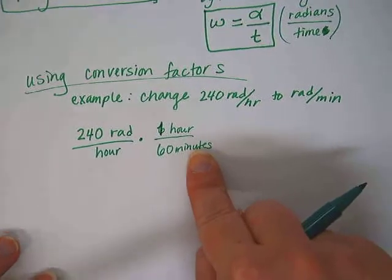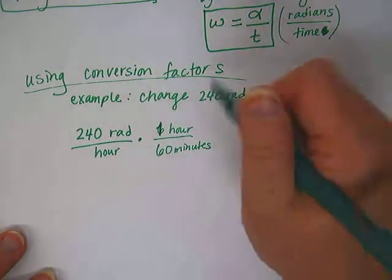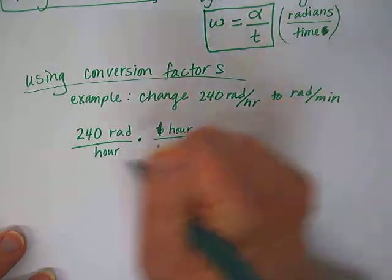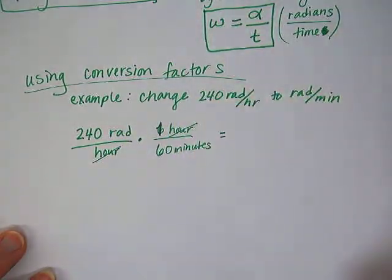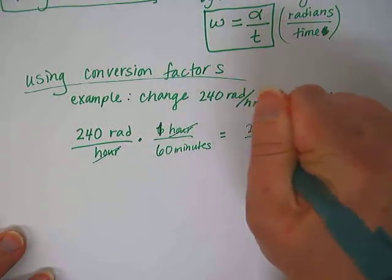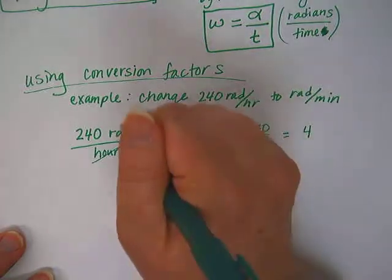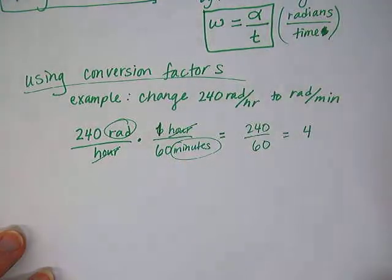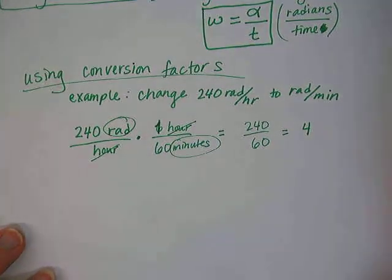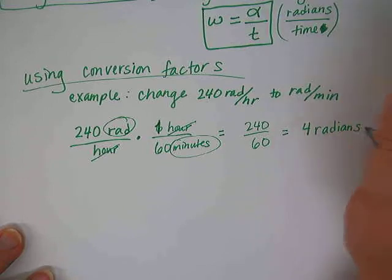In this case, I want to get rid of hours and change to minutes on the bottom. And so I want to put the hour on the top to cancel there and the minutes on the bottom. Is that all I need to do to change to radians per minute? Yeah. So basically, the hour cancels with the hour. And I end up with 240 divided by 60, which is 4.